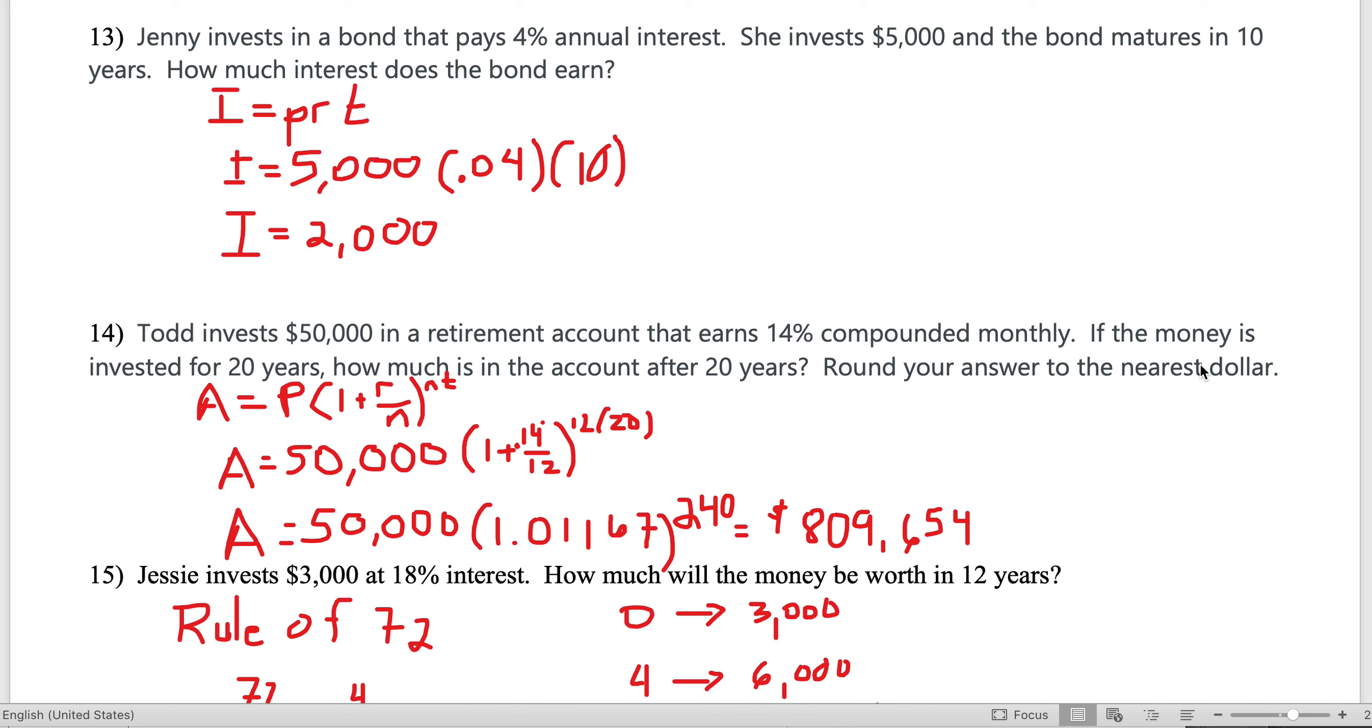Number 13: Jenny invests in a bond that pays 4% annual interest. She invests $5,000 in the bond that matures in 10 years. How much does the bond earn in interest? This was a question we did at least two, maybe three or four times in our review during class. This was one of the most commonly missed questions on the last test.